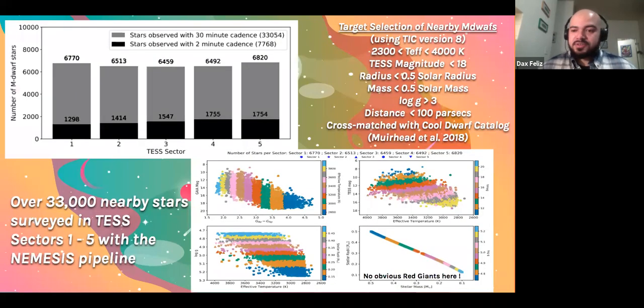So in order to do a transit survey, first you need a target list. So my team and I came up with this profile that we thought best describes what an M dwarf appears like. So using the TESS input catalog version 8, we came up with the selection criteria for our effective temperature, our TESS magnitude, the stellar radius, the mass, the surface gravity. And we wanted to focus on a volume-limited sample of stars within 100 parsecs. And to ensure that these are likely M dwarfs, we also cross-matched them with the Cool Dwarf catalog from Muirhead et al. 2018.